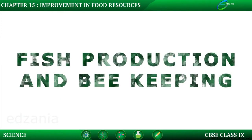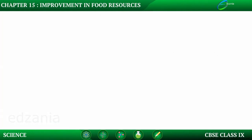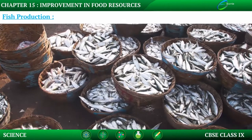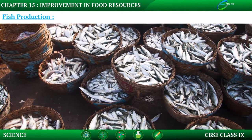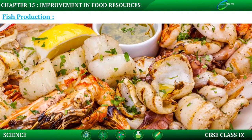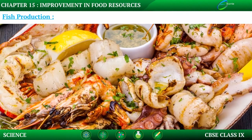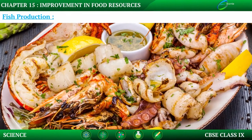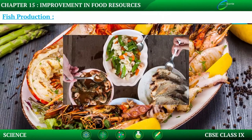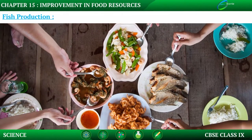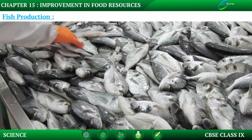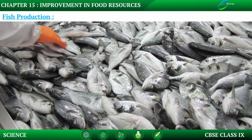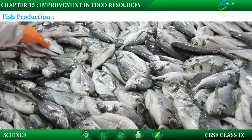Fish production and beekeeping. You all know that fishes are also a source of food. All over the world, people like different types of fishes or other aquatic animals as food. Fish production is necessary to fulfill the demand of fish as food. Fish production is also included in animal husbandry.